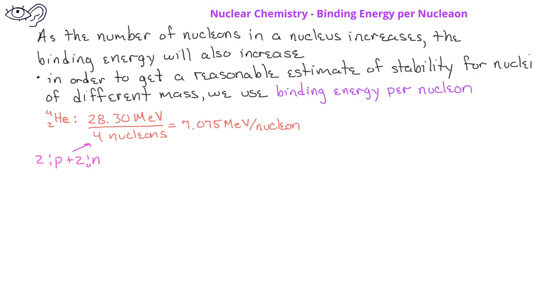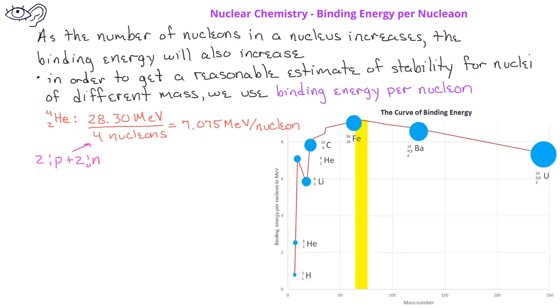Nuclear scientists have done such calculations for a wide range of nuclei. If we plot the binding energy per nucleon versus the mass number, as in this figure, we see that the binding energy per nucleon increases as mass number increases up until about a mass number of 60. After a mass number of 60, the binding energy per nucleon begins to decrease. Therefore, nuclei close to a mass number of 60 are the more stable nuclei.